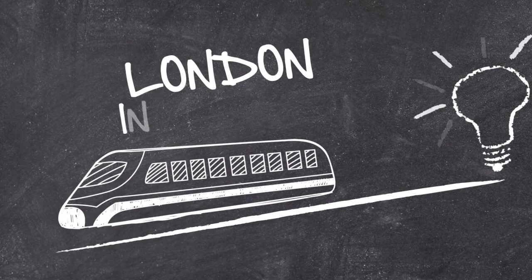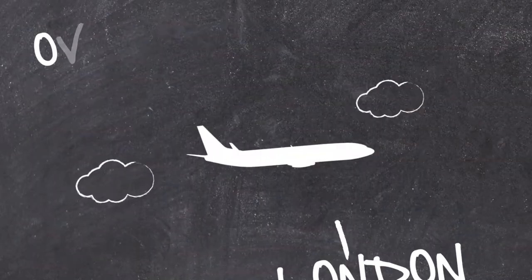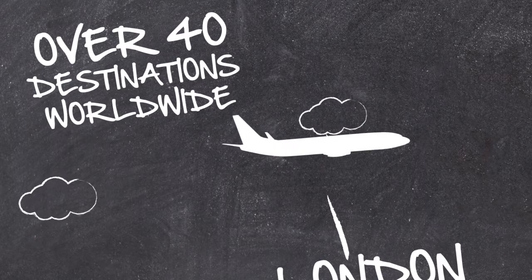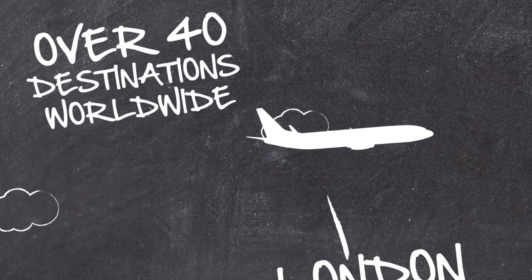Devon also has the right connections. There's London just two hours away by train, our efficient road and sea links, and over 40 worldwide destinations just a short hop away by plane.